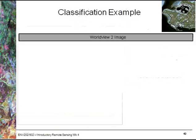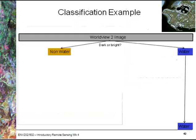Here's an example that I give. Let's start with a WorldView-2 image. Then I use the cue of looking at tone and colour.